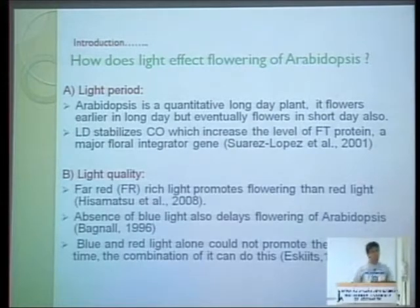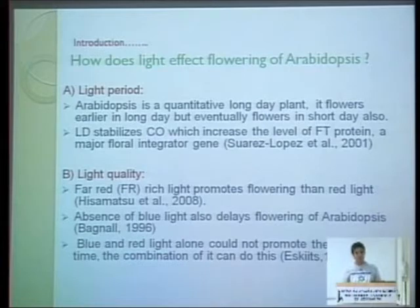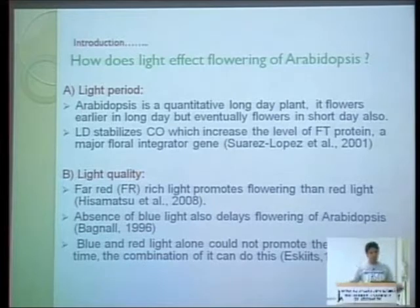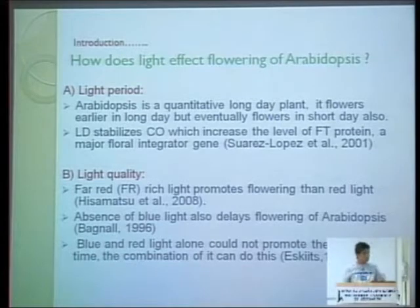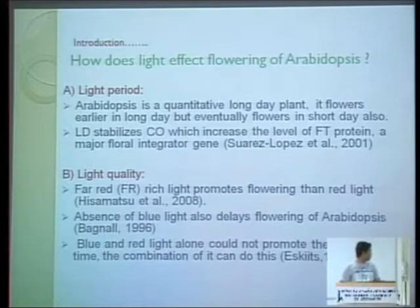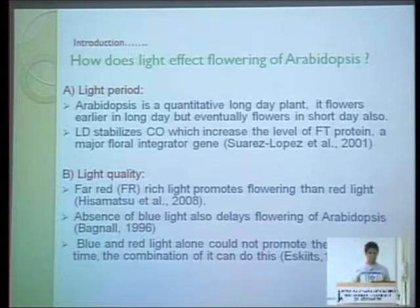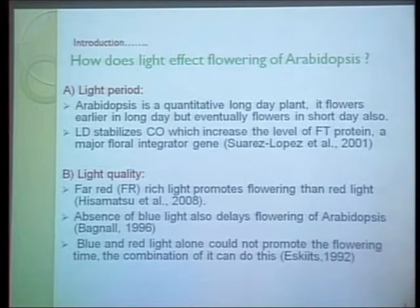The quality of light also affects flowering. Recent research has revealed that far-red light promotes flowering more than red light, and in the absence of blue light, flowering is delayed — meaning flowering is promoted by the blue part of the spectrum. Some research says blue and red light alone cannot promote flowering, but a suitable combination of those can promote flowering.